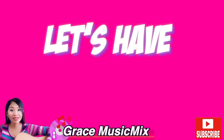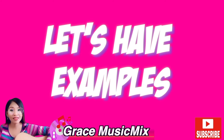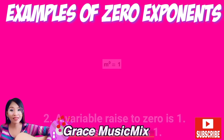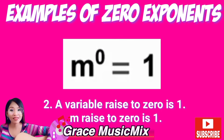Let's have examples. Example number 1: zero raised to zero is undefined. Example number 2: a variable raised to zero is 1 — for example, 'a' raised to zero is 1.